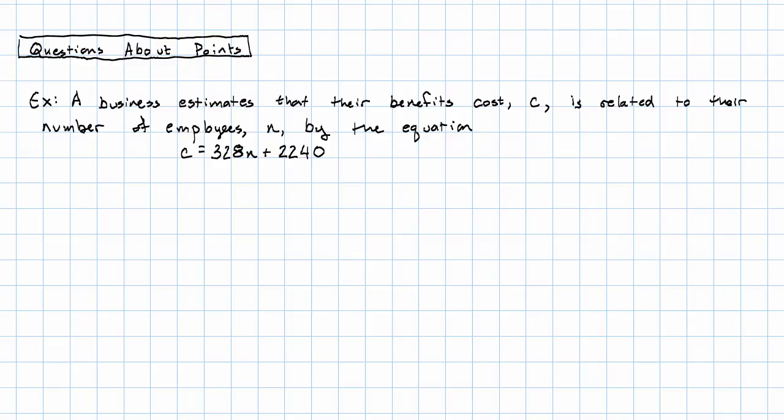Possibly the most natural sort of question to ask given an equation in two variables is what the value of one variable is given the value of the other variable. For example, suppose we have the business from the last video that estimates that their benefits cost, C, is related to their number of employees, N, by this equation.